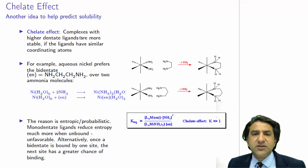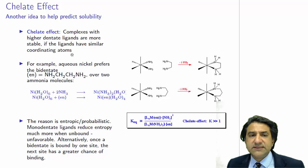Basically it goes like this. Complexes with higher dentate ligands are more stable, much more stable, if the ligands have similar coordinating atoms.